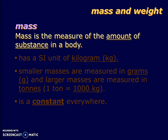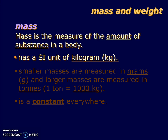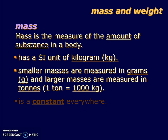What is mass? Mass is the measure of the amount of substance in the body — meaning the amount of solid, liquid, or gas in the body is termed as mass. Mass is measured in the SI unit of kilogram (kg). For smaller masses we use other units like gram, and for larger masses we can use units like tons. One ton is 1,000 kg, but we seldom use tons in Singapore.